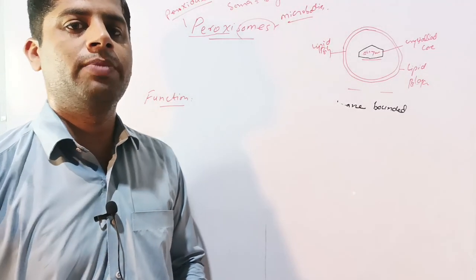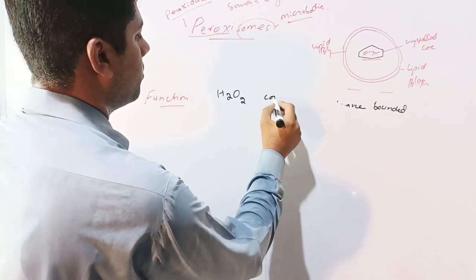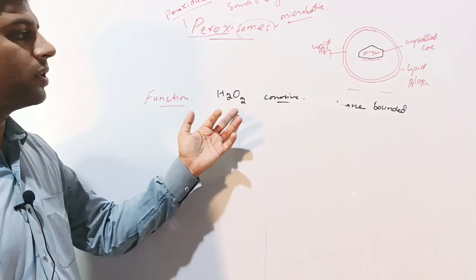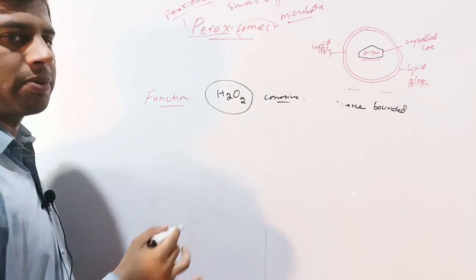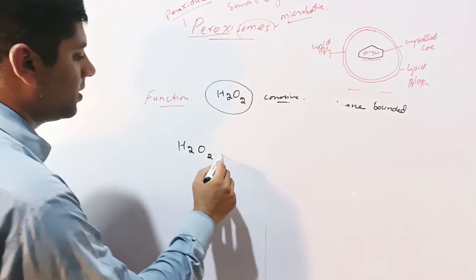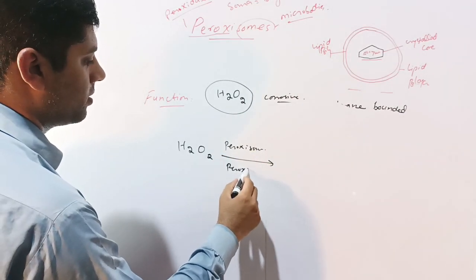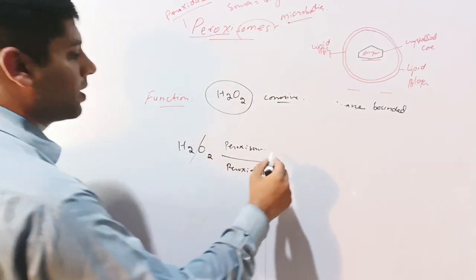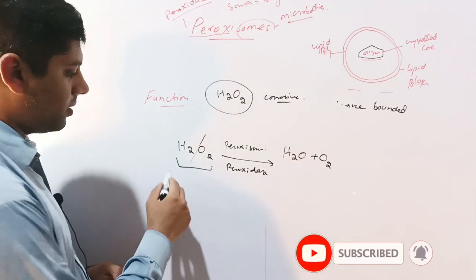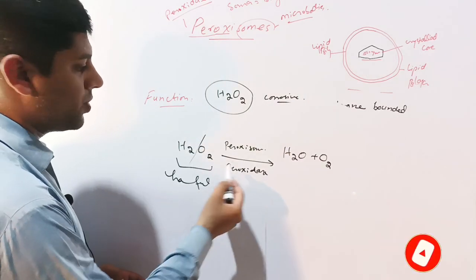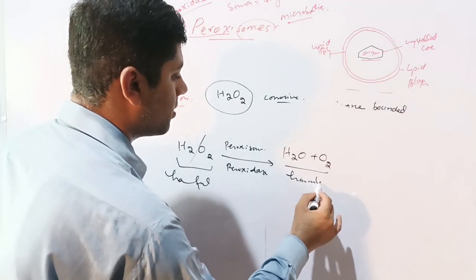The function of peroxisomes is concerned with metabolism. Hydrogen peroxide is synthesized during metabolic reactions in the body and this is corrosive and harmful to cells. The body has a systematic mechanism for utilizing this hydrogen peroxide. Peroxisomes release the enzyme peroxidase which breaks down hydrogen peroxide into water and oxygen. Hydrogen peroxide, a harmful substance, is neutralized by peroxisomes using peroxidase enzymes, producing two harmless or useful substances in the cell.